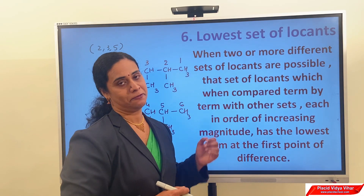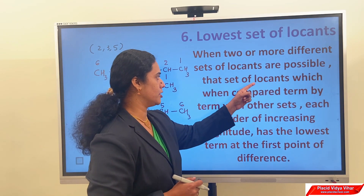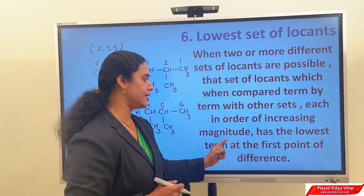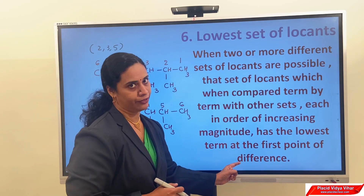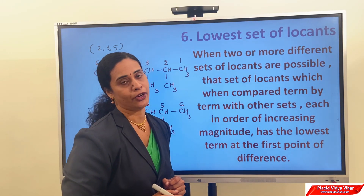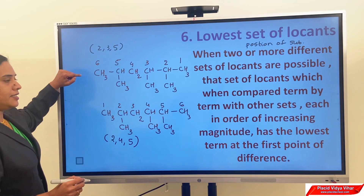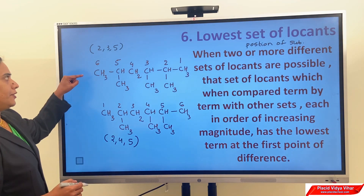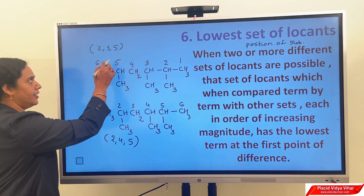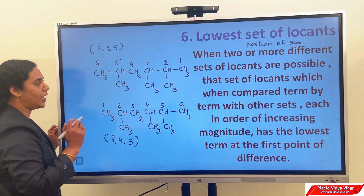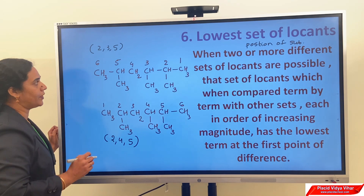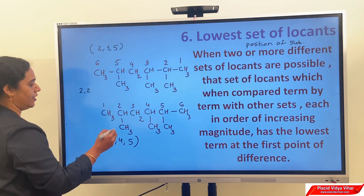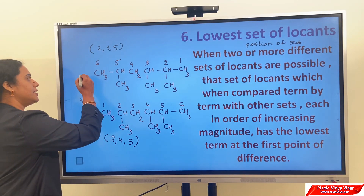Rule number 6: lowest set of locants. When two or more different sets of locants are possible, that set of locants which, when compared term by term with other sets each in order of increasing magnitude, has the lowest term at the first point of difference. Locant means position of substituent. In this case, the set of locants is 2, 3, 5, whereas in the second case it is 2, 4, 5. The first set of locants is correct because it is smaller than the second set. We compare each set: first terms are both 2 — same. Second terms: 3 vs 4. Since 3 is less than 4, this is the correct way of numbering.